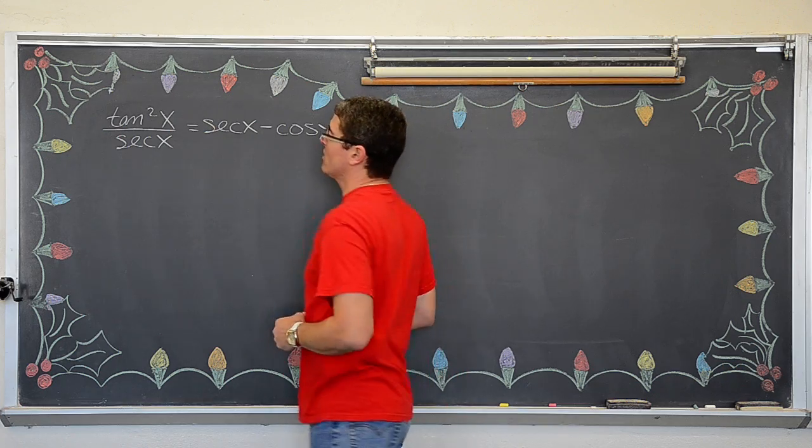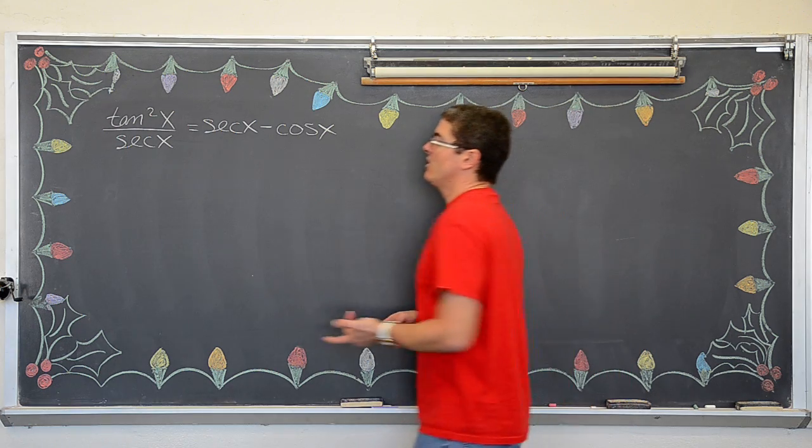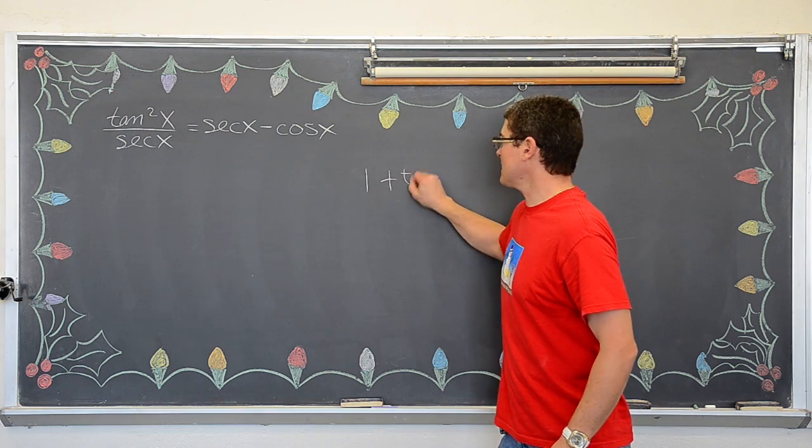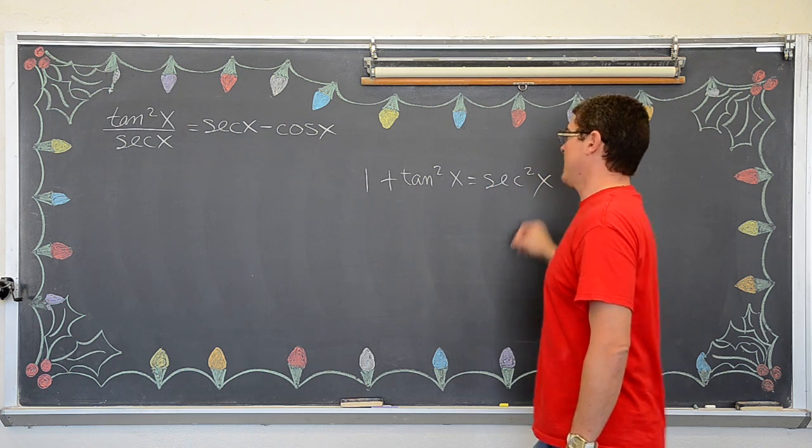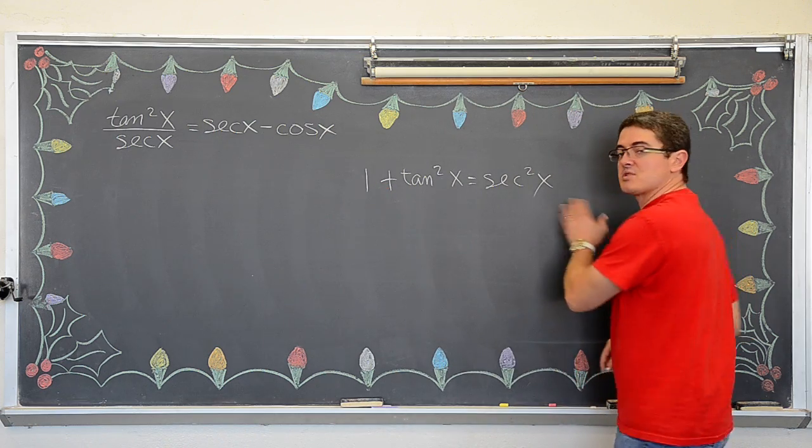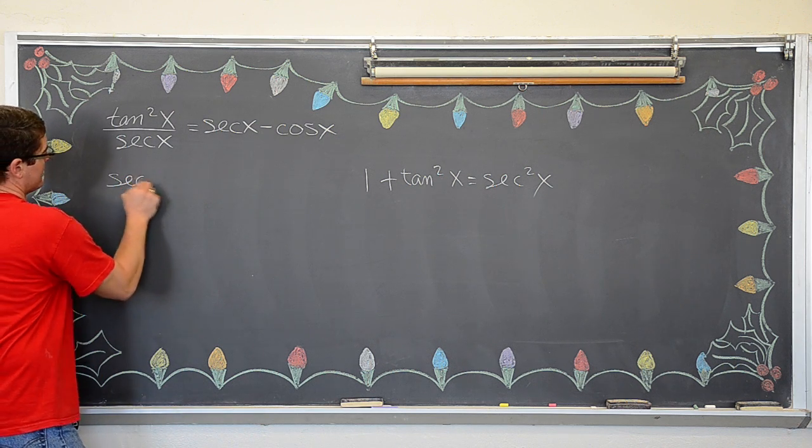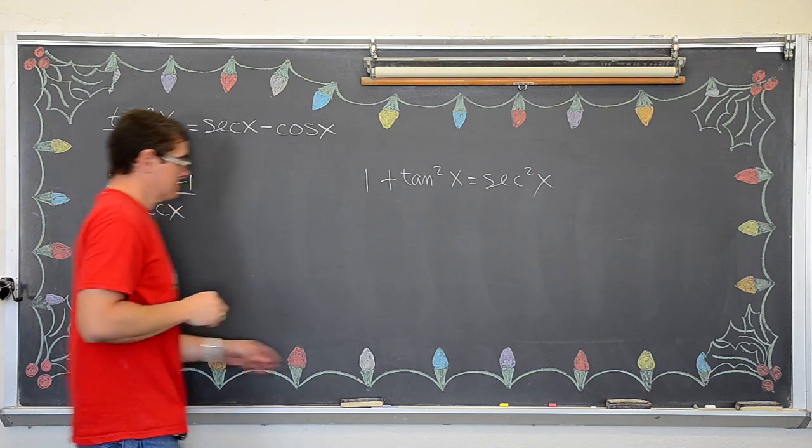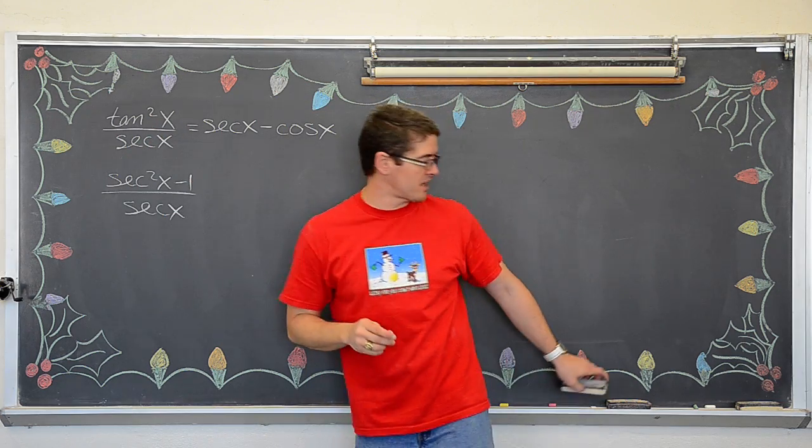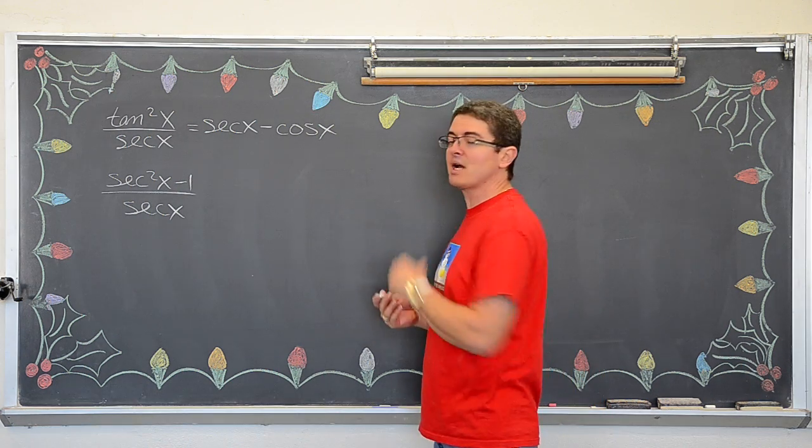I see this tangent squared x and I don't see any tangent functions on the left hand side. So, I am going to take out tangent squared x and one of our identities are 1 plus tangent squared x equals secant squared x. And I am going to use that Pythagorean identity to rewrite the numerator. I am going to bring this 1 over to the other side and write the tangent squared x is equal to secant squared x minus 1.